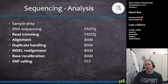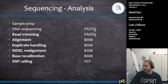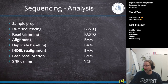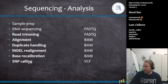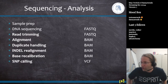In a normal sequencing analysis, we start with sample preparation, which is more biology than bioinformatics. Then we do DNA sequencing, which produces something called a FASTQ file. After that, there are several steps before we can discover a single nucleotide polymorphism: read trimming, alignment, duplicate removal, indel realignment, base recalibration, and finally SNP calling. This is the standard pipeline with a lot of quality control steps built in.